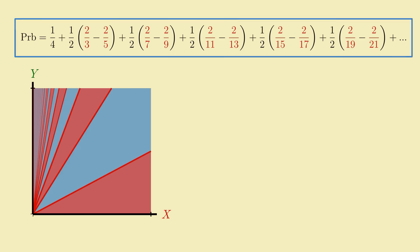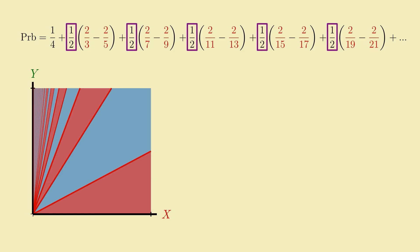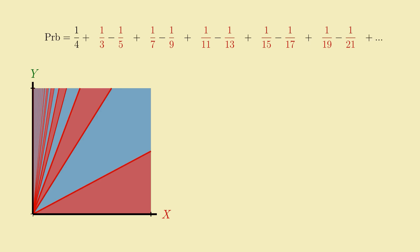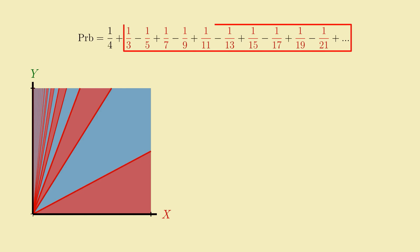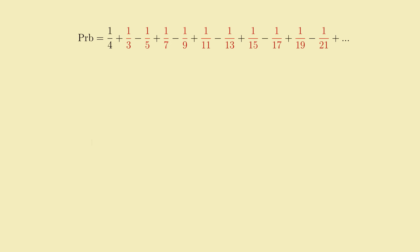We can simplify it a little by multiplying in all the factors of 1 half. Some of you might recognize the part of the series in red here, especially if you've had a calculus class before. It looks very, very similar to another very famous infinite series. The one that goes 1 minus 1 third, plus 1 fifth, minus 1 seventh, plus 1 ninth, and so on.